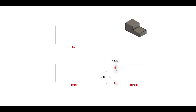What if the same feature was produced at the lowest size limit possible? If the part was created with this feature measuring at 0.48, we would refer to this as least material condition, or LMC.